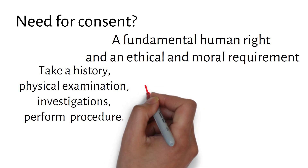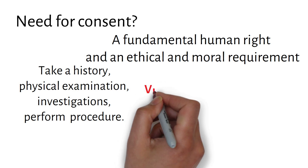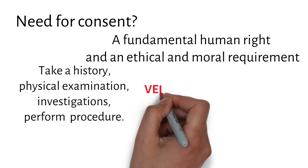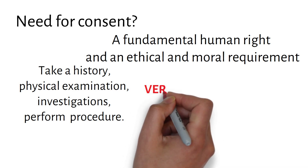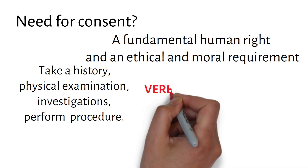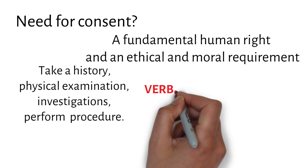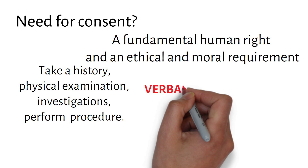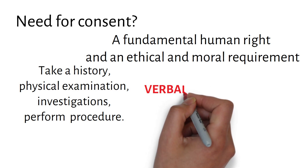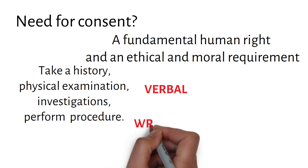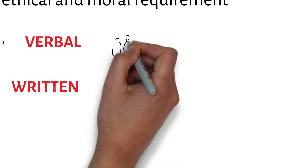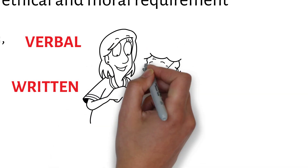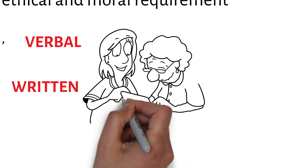For consent to be valid it must be voluntary and informed, and the person consenting must have the capacity to decide. Consent may be verbal — for example, a patient may be willing to have an ultrasound examination — or it may be implicit, such as when a patient holds out her arm and rolls up her sleeve for a blood test. Written consent is taken by physicians and nurses in patients being admitted to the hospital who will probably have a procedure.